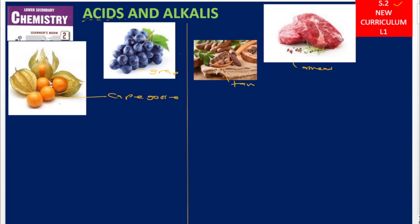These gooseberries and grapes contain acids. An acid is a substance that, when dissolved in water, produces hydrogen ions as the only positively charged ions. All acids have a sour taste — the word 'acid' comes from the Latin word 'acidus,' meaning sour. When gooseberries are not ripe, they are sour, and grapes are also sour, so they contain acids.